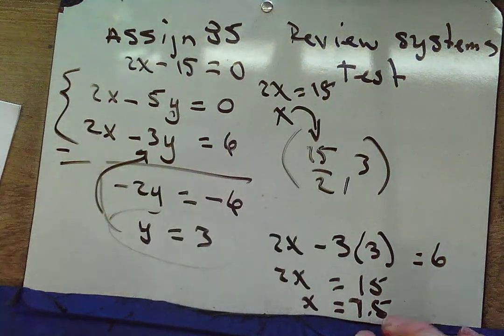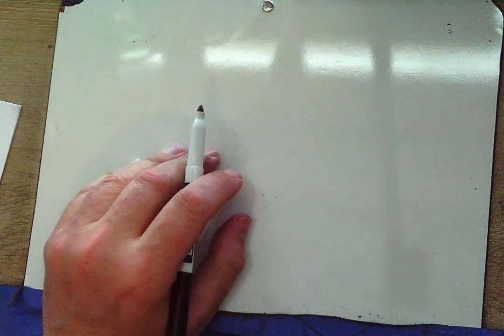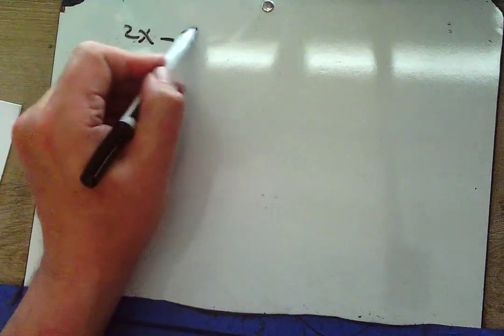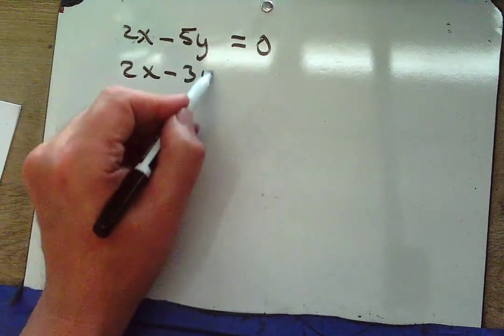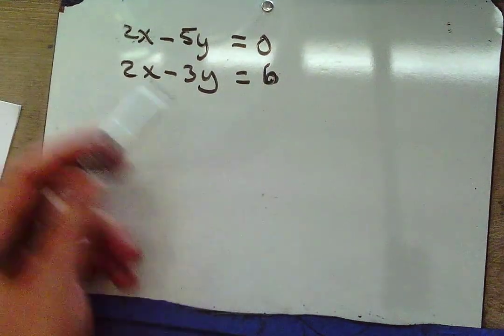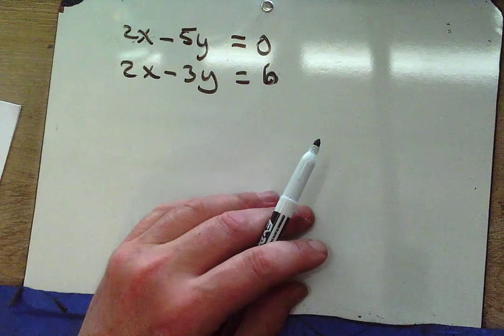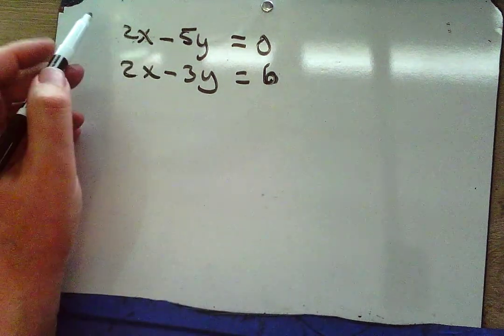You should definitely be comfortable solving with elimination or substitution — that's a given. Now let's solve that last one with substitution: 2x minus 3y equals 6. Substitution looks a bit messier here, but since you asked, I'll do it.